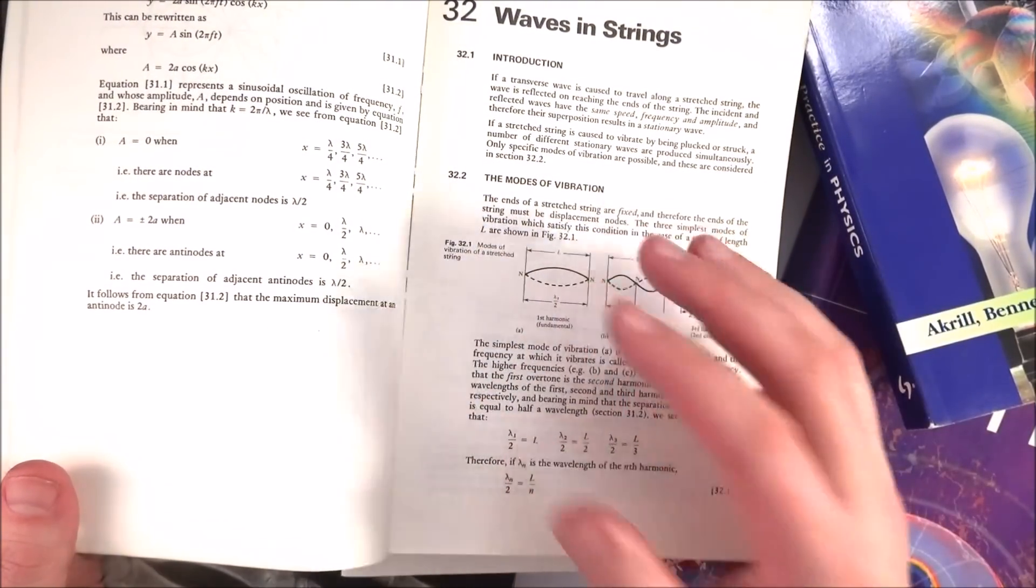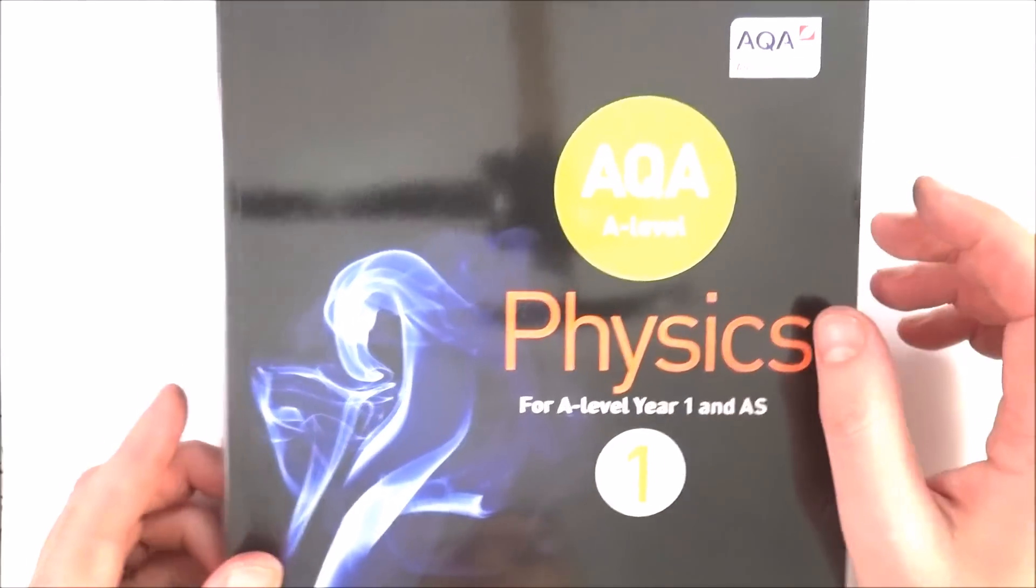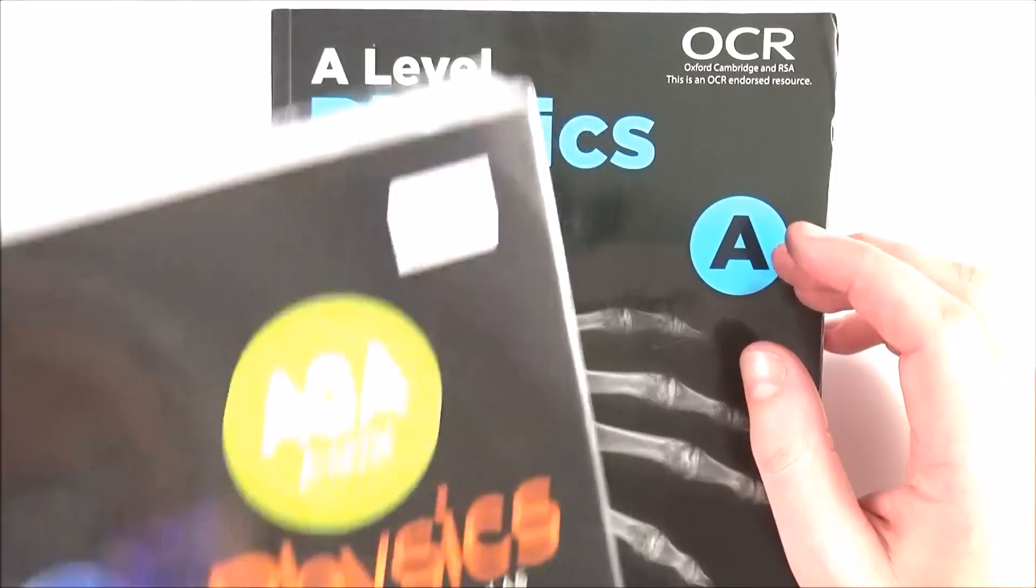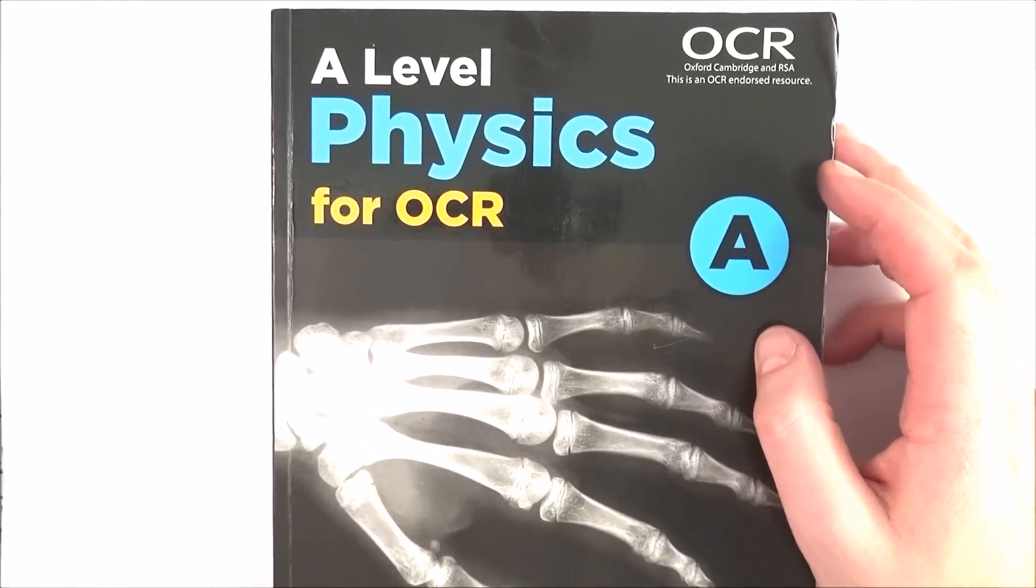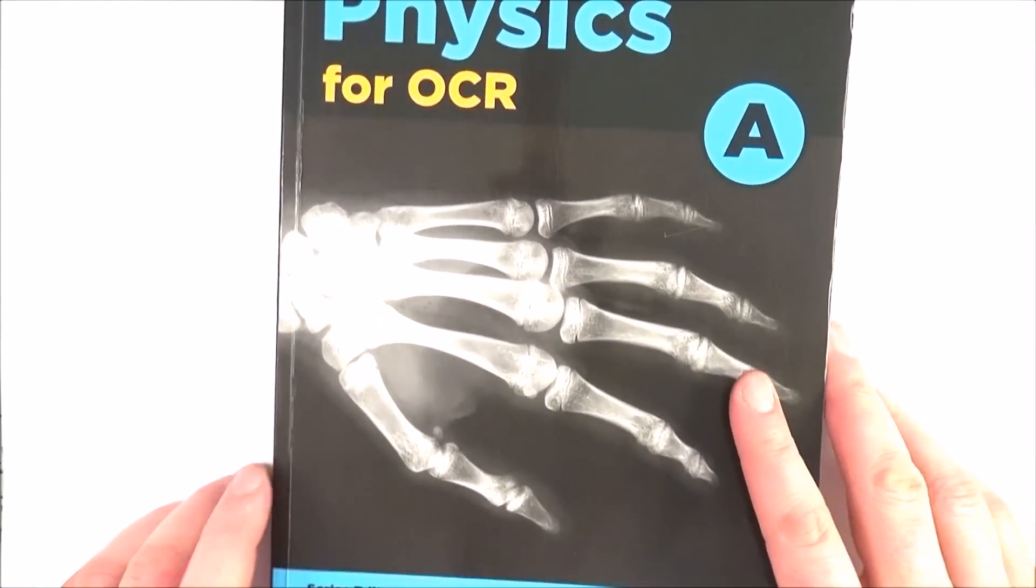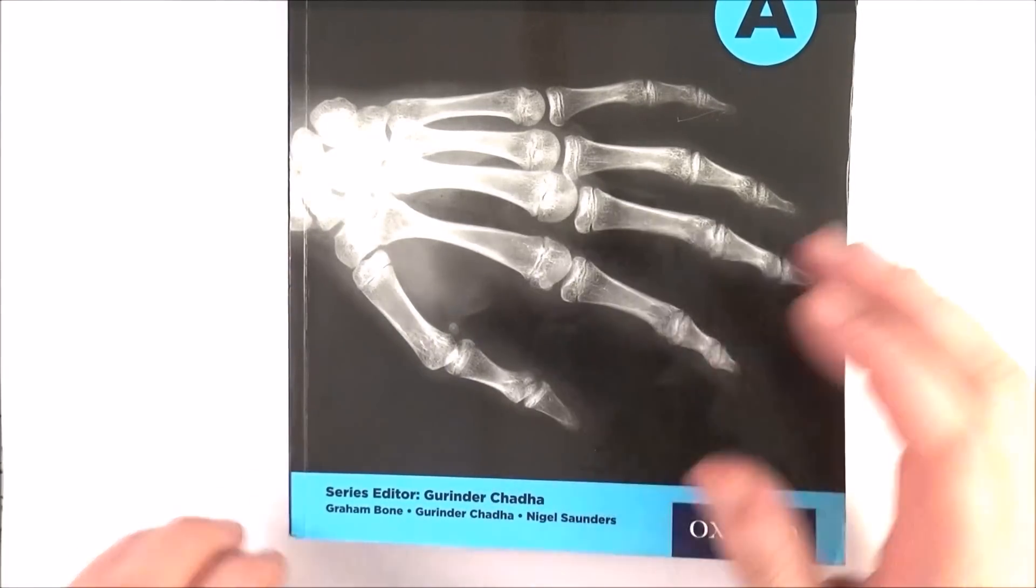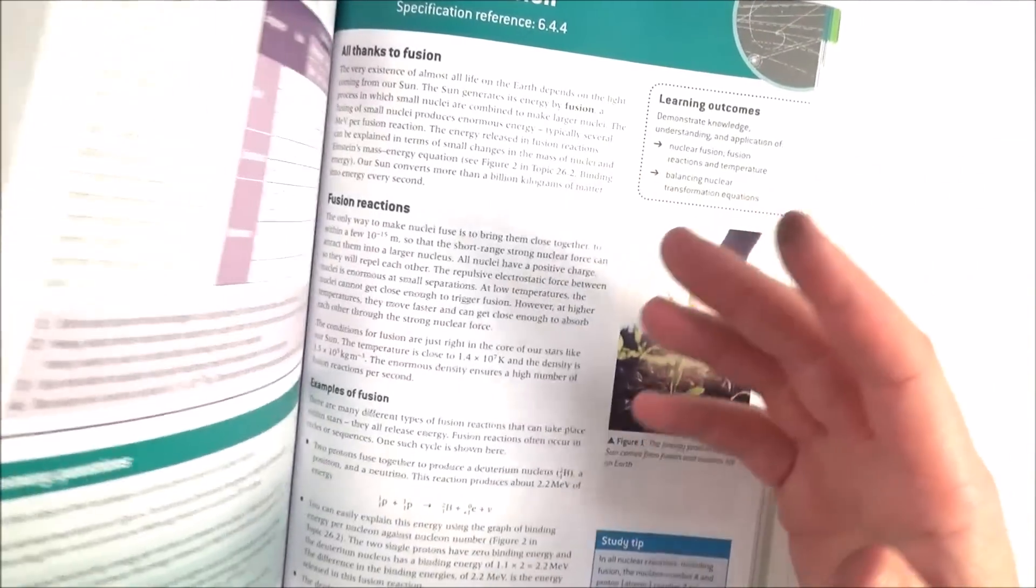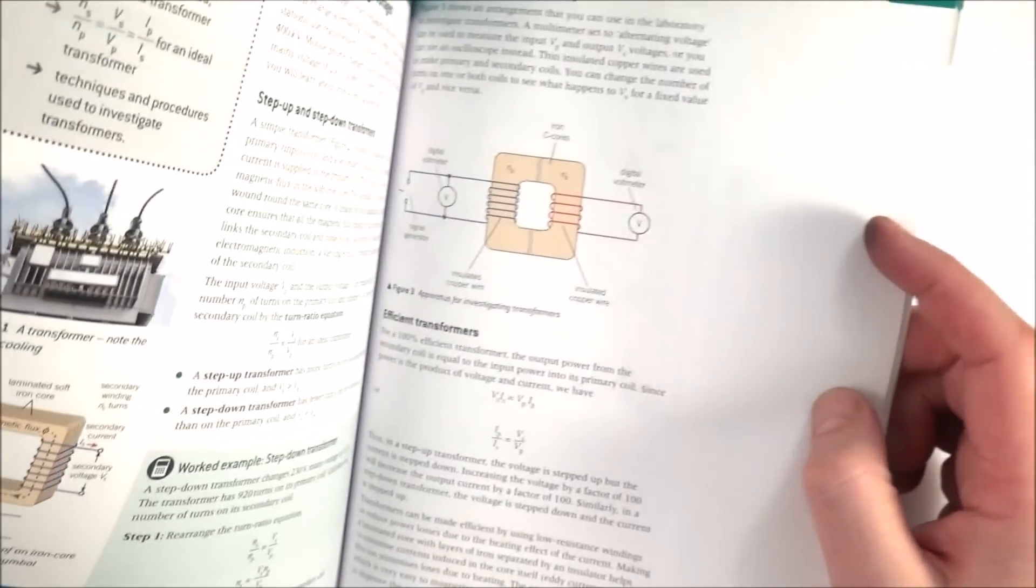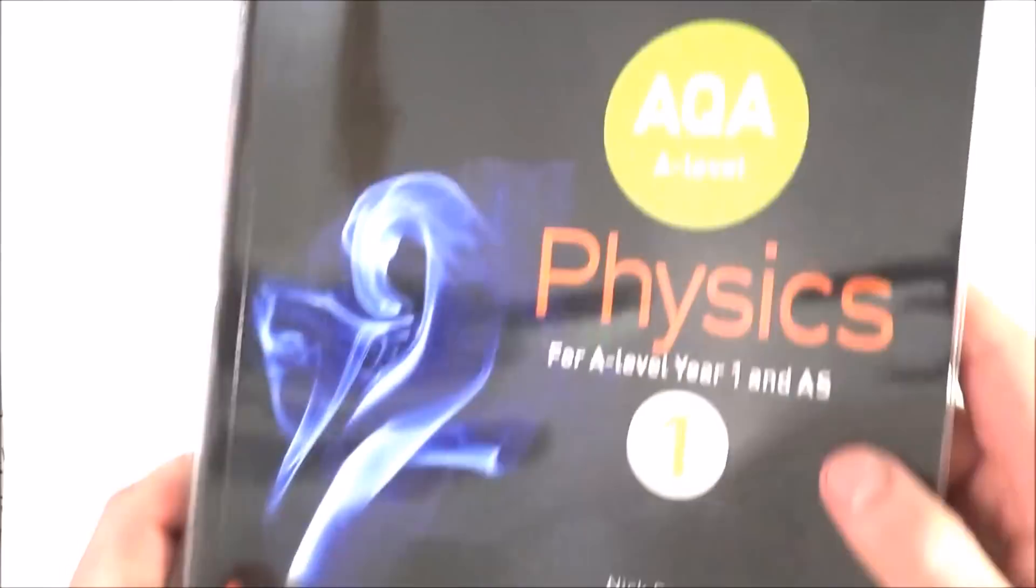So here are my top books that I recommend. Depending which course you're doing and what your teachers have decided, you'll probably have a core textbook. Last year I used this one here from Oxford A-level Physics for OCR. Some really good work that they've produced. I found this book invaluable when I was actually teaching the OCR course.